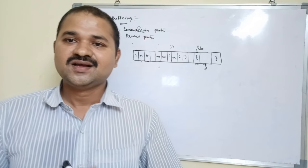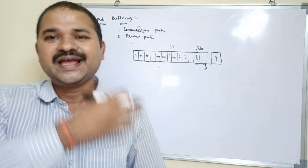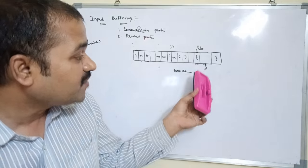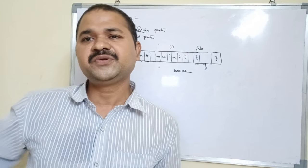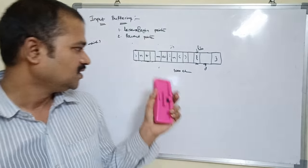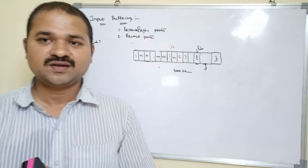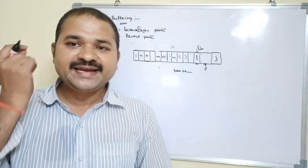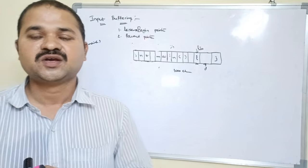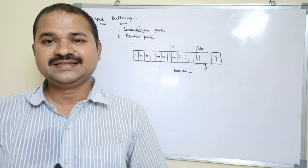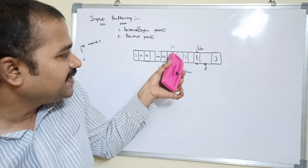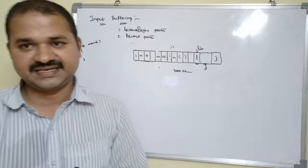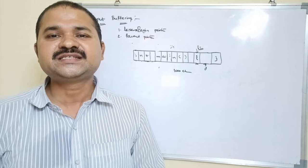If our program size is very large, we require a lot of system calls. If the program size is 1000 characters, then 1000 system calls are needed, which is an unnecessary burden on the computer and the corresponding I/O mechanism. We can overcome this problem with the help of input buffering techniques. The problem is that at a time we can read only one character from the hard disk, so if the program is large we require too many system calls.